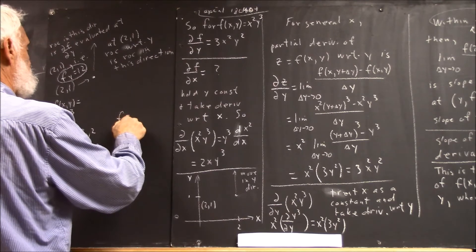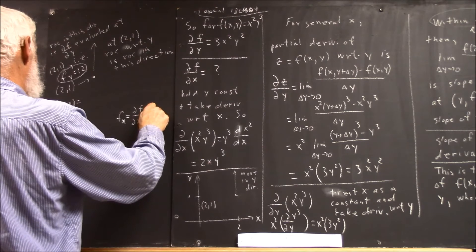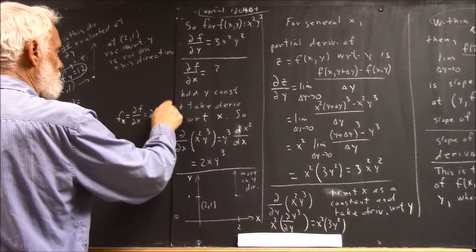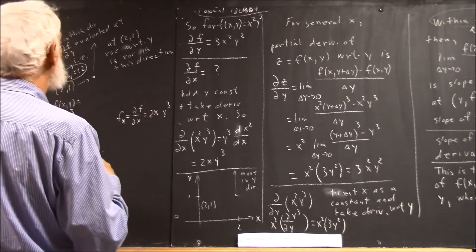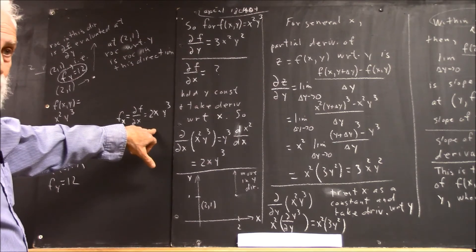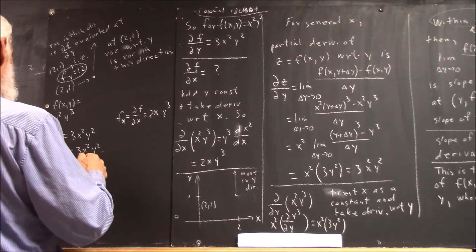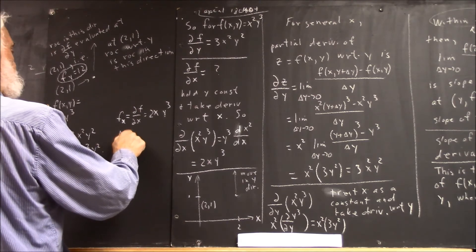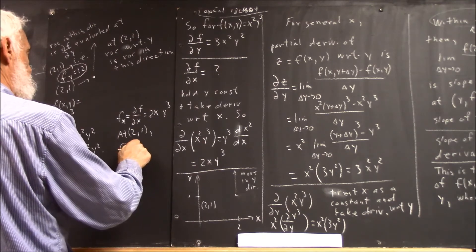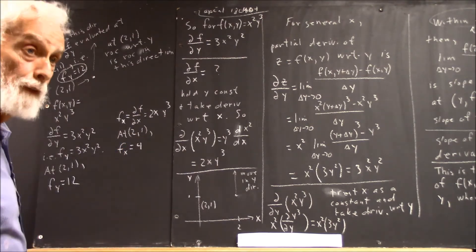Now, fx means partial of f with respect to x, and we know that's 2xy cubed. Did I do that right before? Yeah. Fx equals 4.